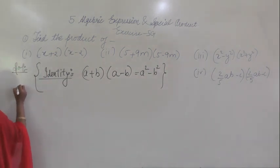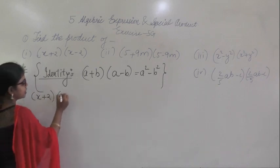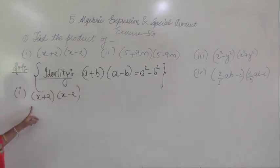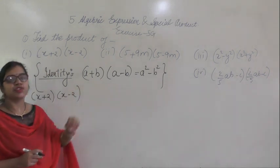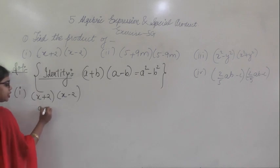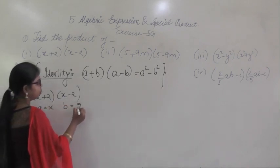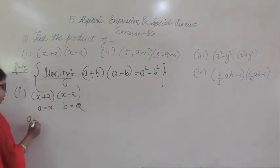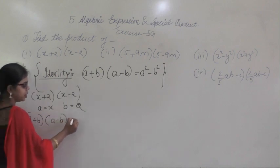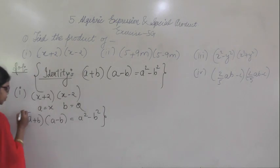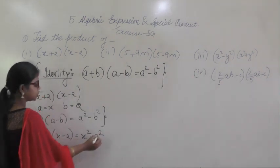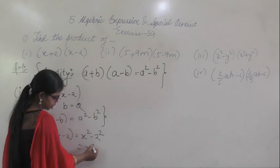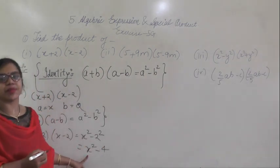Let's start with question number 1. Here it is given: X plus 2 multiplied by X minus 2. Instead of multiplying directly, use the identity A plus B into A minus B equals A squared minus B squared. Here A equals X and B equals 2. Substituting, X plus 2 into X minus 2 equals X squared minus 2 squared, which gives X squared minus 4.